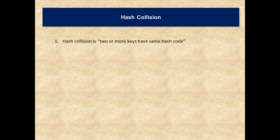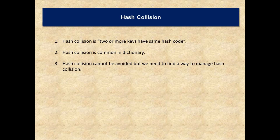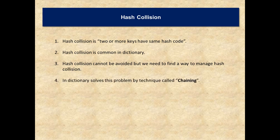Hash collision is two or more keys have same hash code or lead up to the same index. Hash collision is common in dictionary because the size is 16 but possible values are more. Hash collision cannot be avoided. We cannot avoid hash collision because there is a possibility that multiple values return the same hash code or they will return the same index. But we need to manage it. Let us see how to manage it. In dictionary solves this problem by a technique called as chaining or it is also called as linear chaining.